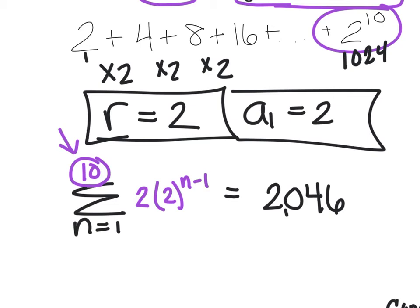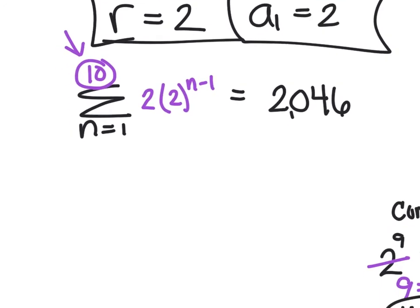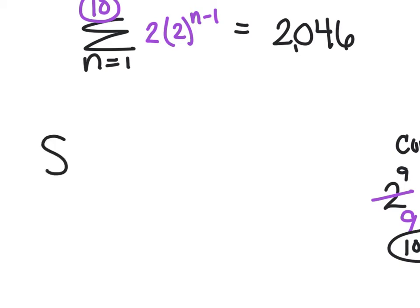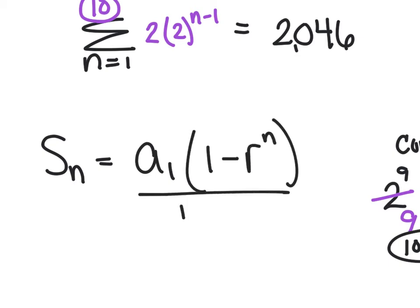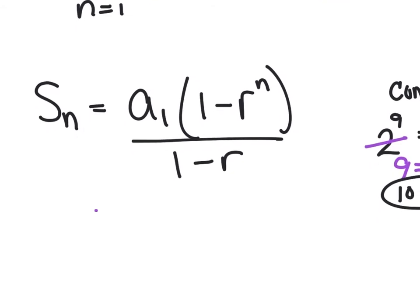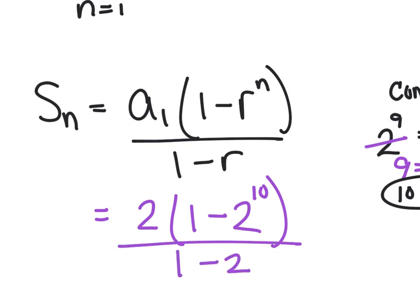I'm going to solve the same question using the sum formula. The sum of n terms equals a sub 1 times (1 minus r to the n) all over (1 minus r). Here a sub 1 is 2, r is 2, and n is 10: so 2 times (1 minus 2 to the 10th) all over (1 minus 2). Carefully type that with the fraction tool and you also get 2,046. Summation notation is usually just as easy, but if you have an old TI-83 without the summation button, this formula is a good alternative.